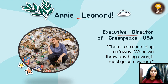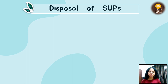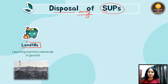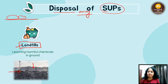Annie Leonard, the executive director of Greenpeace USA, once said: 'There is no such thing as away. When we throw anything away, it must go somewhere.' So where does it go? The next problem is single-use plastic disposal. The first destination is landfills — plastic leaches chemicals into the ground and into groundwater, and ultimately those chemicals get into you, causing diseases.